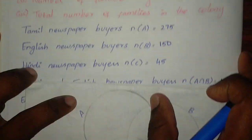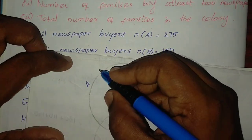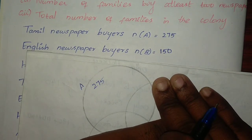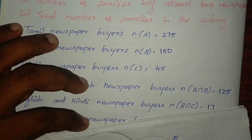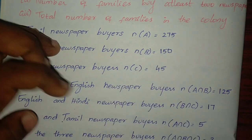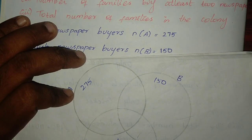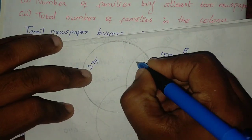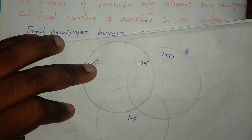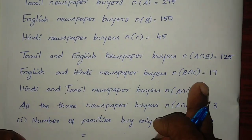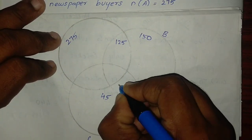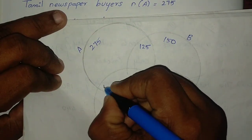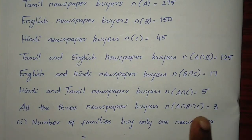Now we represent the values in the Venn diagram. Total for A is 275, B is 150, C is 45. Tamil and English intersection is 125, English and Hindi is 17, Hindi and Tamil is 5, and all three is 3.